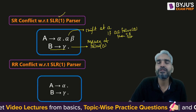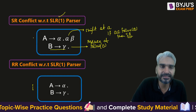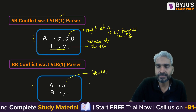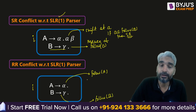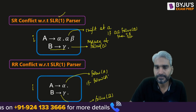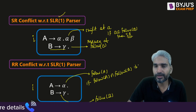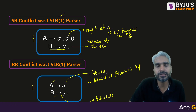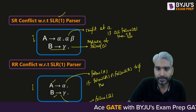The idea is: if terminal a belongs to FOLLOW(B), then on terminal a we will shift as well as reduce — therefore SR conflict will exist. For RR conflict with two reduce productions in state i, A→α is reduced at FOLLOW(A) and B→γ is reduced at FOLLOW(B). If FOLLOW(A) ∩ FOLLOW(B) ≠ ∅, there is a common terminal on which both reductions occur, giving an RR conflict.